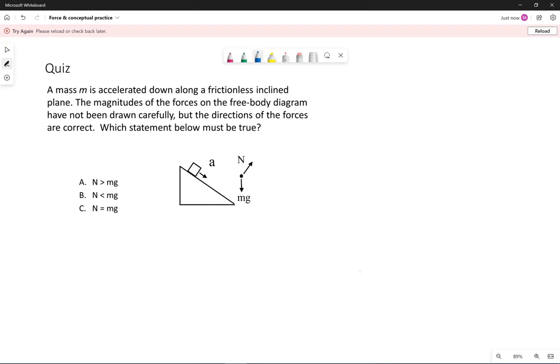mg always straight down towards the center of the earth. We know the acceleration pointing down the incline. This particular question wants us to relate the normal force to mg. Now I've mentioned this before—it turns out any object moving on an incline, it's typically helpful to rotate the coordinate system.